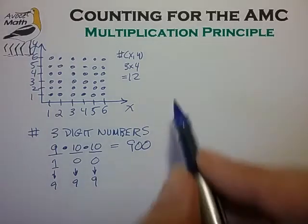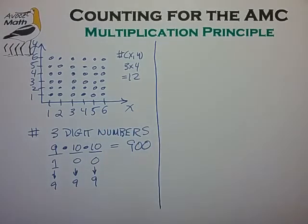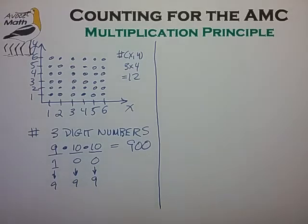Now let's consider the other flavor of the multiplication principle, where the choices are not independent, but the number of choices at each step is independent of the prior choices.